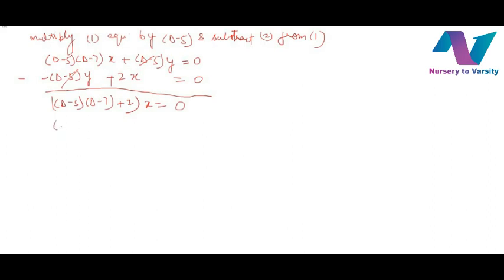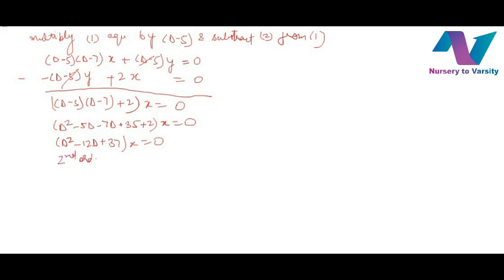Expanding: D² minus 5D minus 7D plus 35 plus 2x equals 0, which gives D² minus 12D plus 37x equals 0. This is a second order differential equation with constant coefficients.